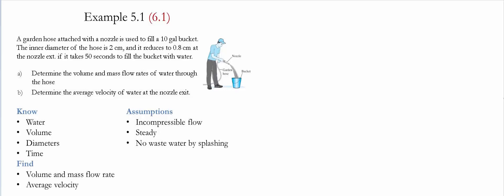Example 5.1 or 6.1 for the given textbooks. For details, please see the description below. A garden hose attached with a nozzle is used to fill a 10-gallon bucket. The inner diameter of the hose is 2 centimeters and it reduces to 0.8 centimeter at the nozzle exit.